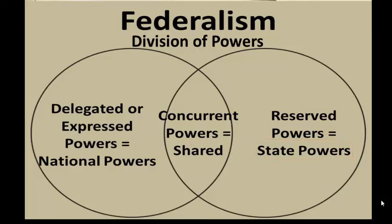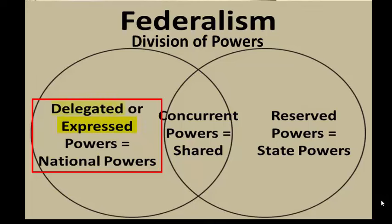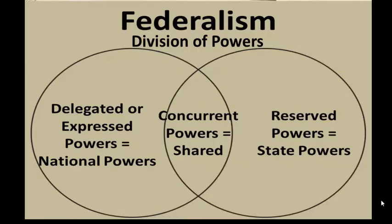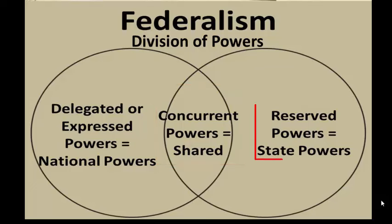You might want to write this down. The first type of powers are national powers, referred to as either express powers or delegated powers — these are the powers listed in the Constitution, including the enumerated powers of Congress. The next type are concurrent powers, shared by both the national government and state governments. Finally, we have reserved powers, which are reserved to the states as clarified by the 10th Amendment.